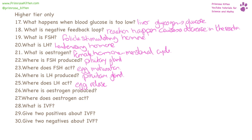Oestrogen is produced in the ovaries. It acts on the pituitary gland and causes it to start the production of follicle stimulating hormone and luteinizing hormone.